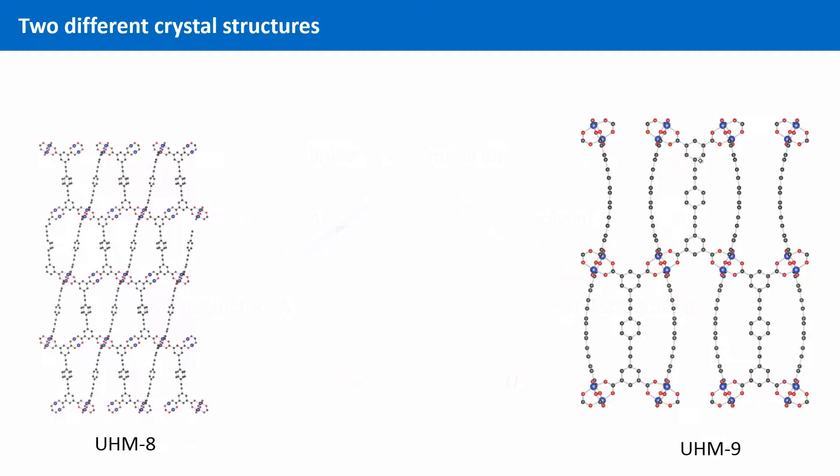This is an example for this problem that comes from our research group again. Our colleague used the same linker and used copper nitrate as a metal source in both cases. But while in the first case she used dimethylacetamide as a solvent, she used a mixture of water, ethanol and dimethylformamide in another experiment.